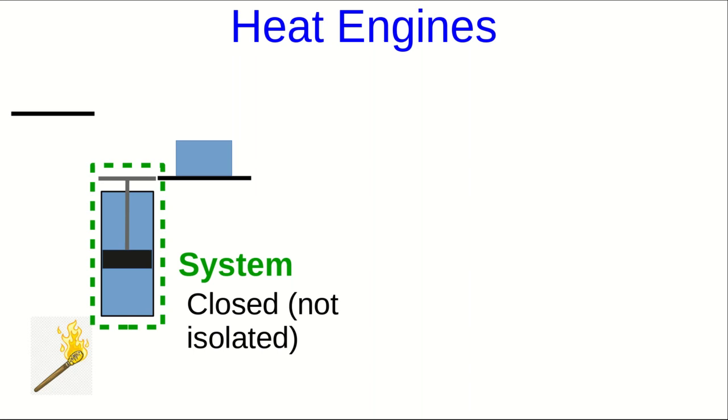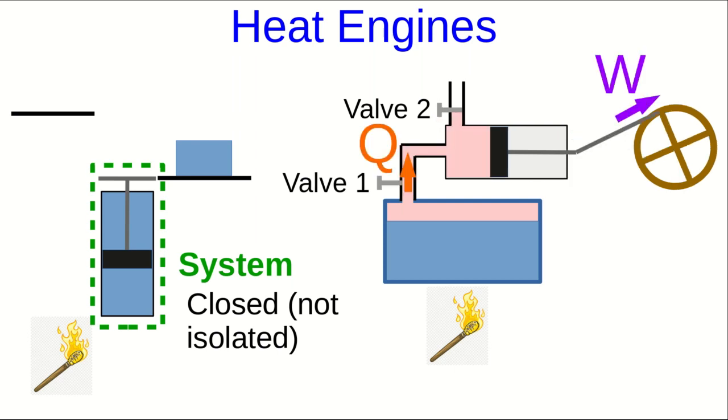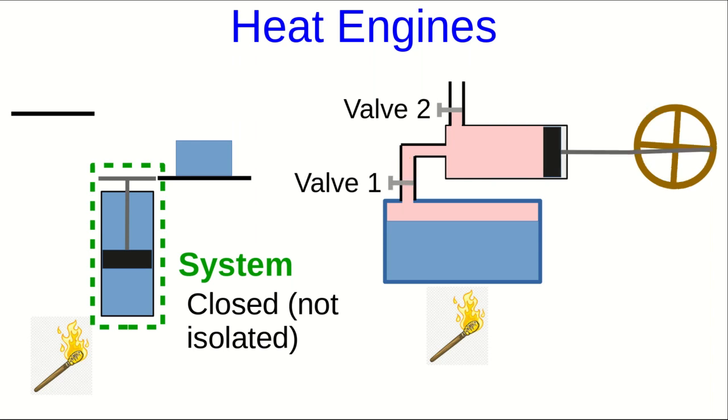But now let's look at a more practical sort of heat engine. This is a simple picture of a steam engine. There's a boiler with a heat source under it, which maintains the water in the boiler at some fairly constant high temperature. And it has two valves connected to a piston. And again, the piston will be our system. The way the steam engine works, very simply, is that first valve one is open, and steam rushes from the boiler into the piston, bringing heat with it. And the piston does work on a wheel or a drive shaft of some machinery or something.